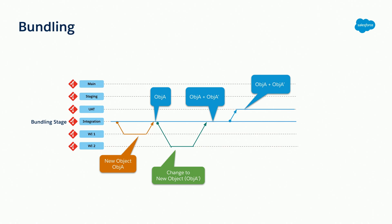Another way to resolve this is by using bundling. Bundling in DevOps Center is basically a stage setting where DevOps Center will use the stage's branch to promote your work item forward instead of using that individual work item branch. So in this example, because I have both the object and the change, when promoting the stage's branch, both changes will be there.